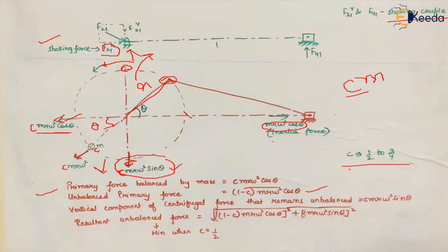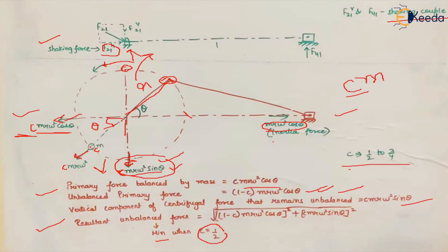The part remaining horizontally unbalanced is (1-c)mrω²cosθ and the vertical imbalance is cmrω²sinθ. The resultant unbalanced force has both a vertical component and a horizontal component. The resultant of these two unbalanced forces gives the total unbalanced force. This resultant unbalanced force is minimum when c equals 1/2, meaning that when half of the unbalanced reciprocating masses are balanced, the resultant unbalanced forces are at their minimum.